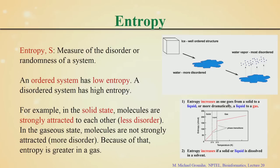Entropy simply means the disorderedness or randomness in the system. If you compare an ordered system and a disordered system, the disordered system has high entropy. For example, ice has low entropy because it is ordered. As you go from ice to water to vapor, entropy increases. The transition from liquid to gas state is highly disordered — entropy is very high.